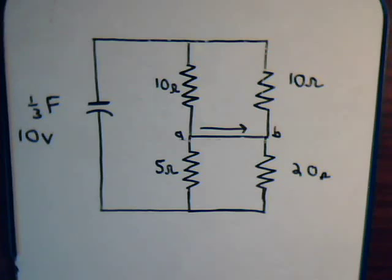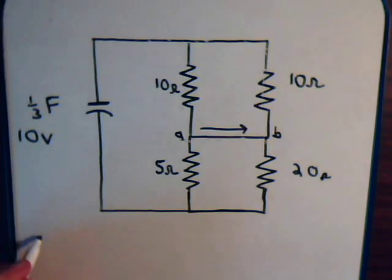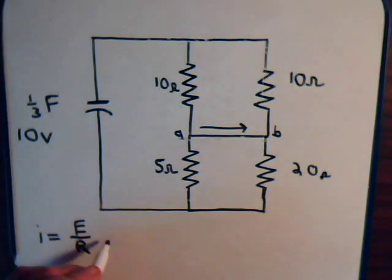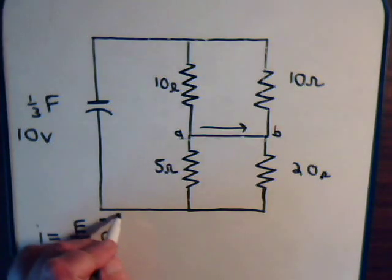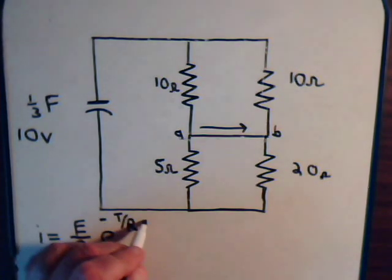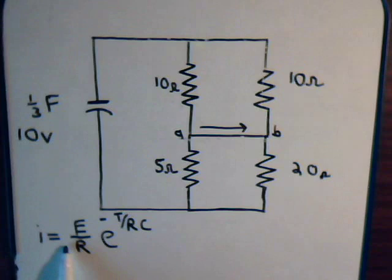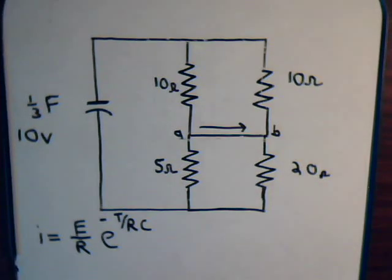For the current involving a capacitor, whether it's a charging or discharging capacitor, it has the same general formula: I equals E divided by the total resistance of the circuit, times e to the minus T divided by RC. R is the total resistance of the circuit. For a discharging capacitor, sometimes you'll see a negative sign — that simply tells you the discharging current is going in the opposite direction to the charging current, so that need not concern us.